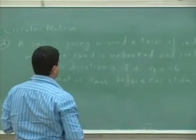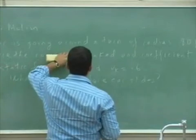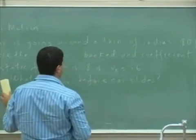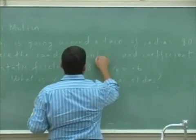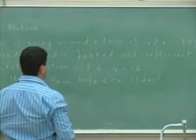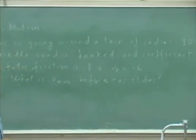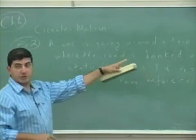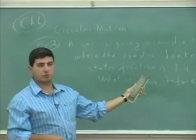A car is going around the turn of radius 80 feet where the road is banked. Now I'm going to change it to banked. So let's change this. Where the road is banked and the coefficient of static friction is 0.8 and mu K is 0.6. What is V max before car slides? So I'm going to change it. I'm going to keep the coefficient of static friction the same, coefficient of kinetic friction the same, except I'm going to make the road banked.